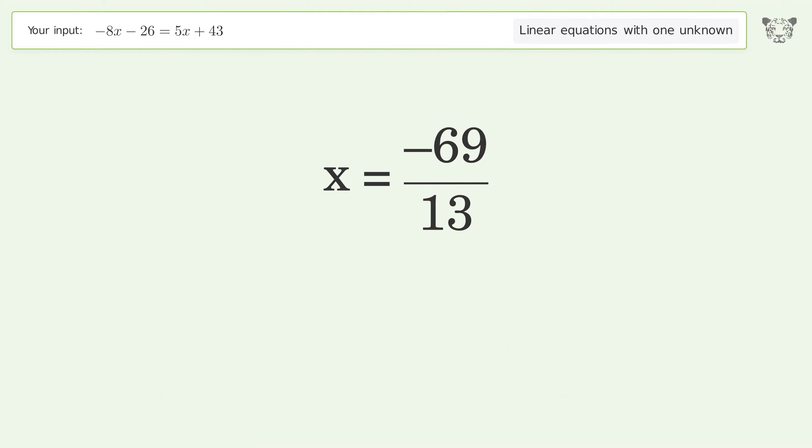And so the final result is x equals negative 69 over 13.